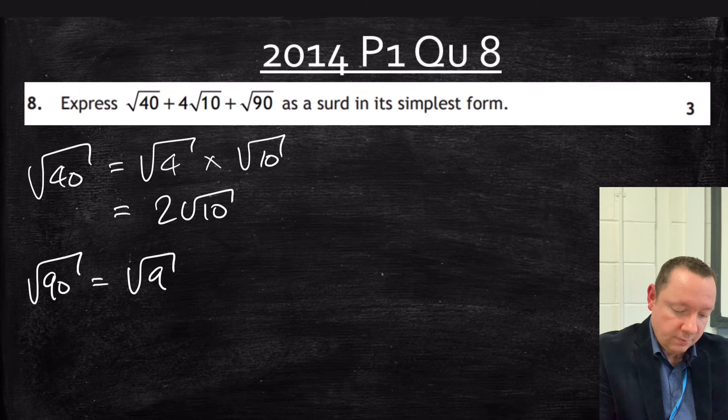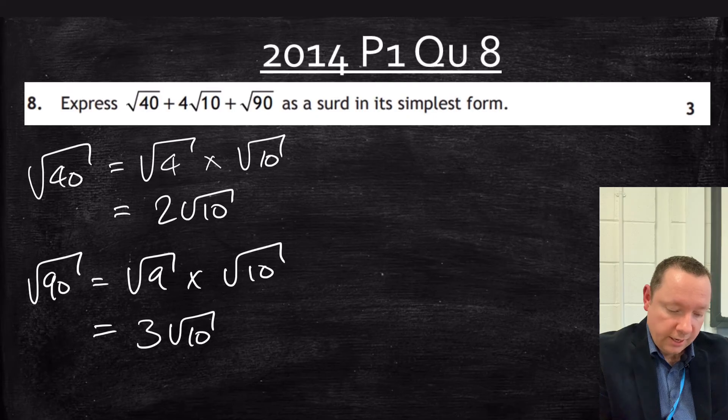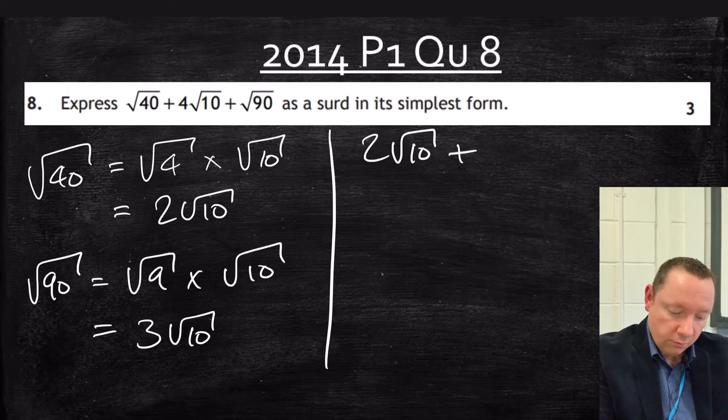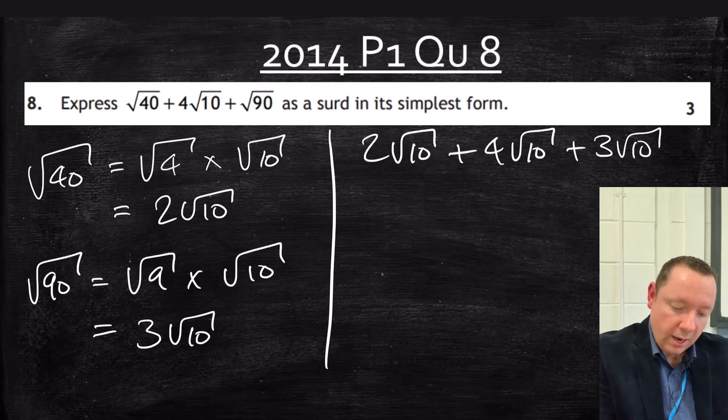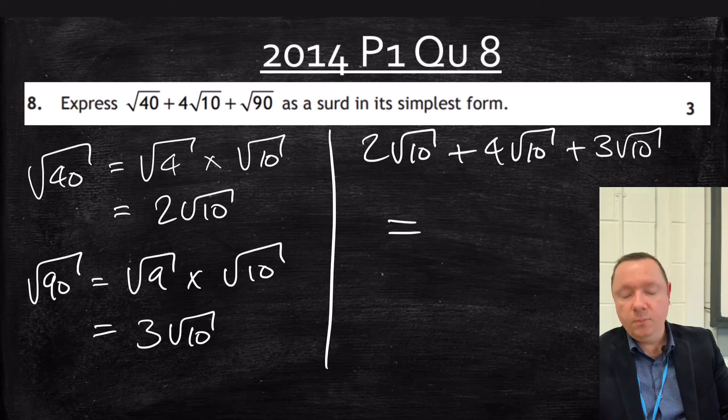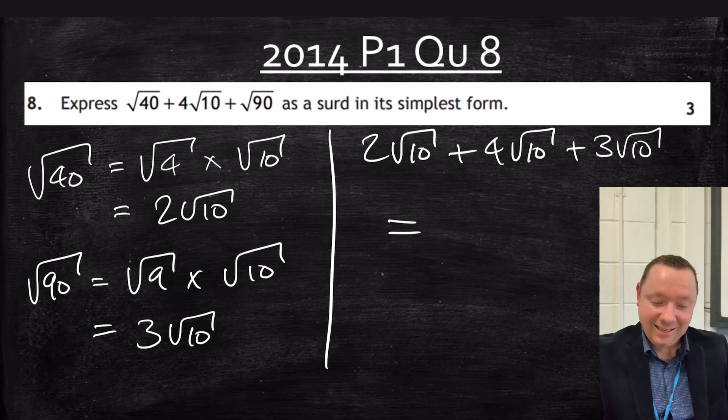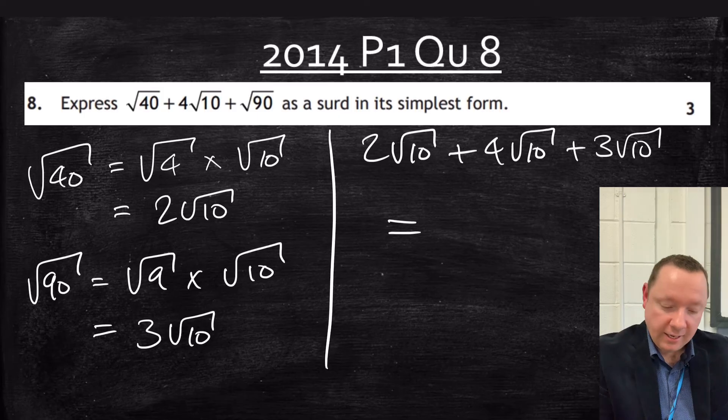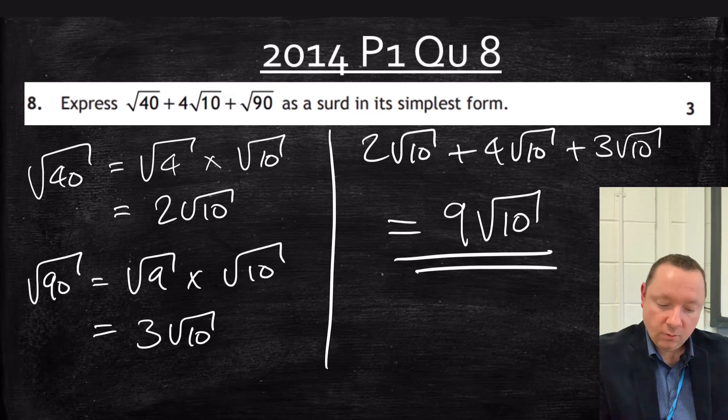I'll now go and simplify my root 90. Well that's 9 times 10. Square root of 9 is 3, so that gives us 3 root 10. So our whole sum simplifies into 2 root 10 plus our 4 root 10 that was already there plus an extra 3 root 10. So adding all them together, 2 plus 4 is 6 plus another 3 is 9. Our answer is 9 root 10. And we're done.